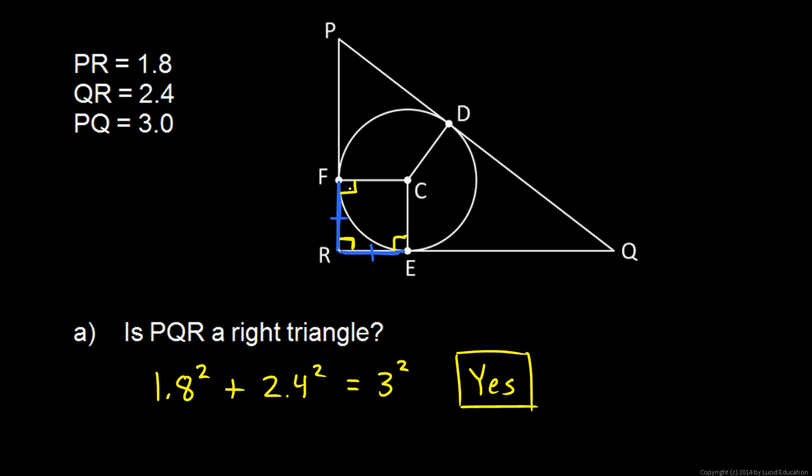So 90 degrees, 90 degrees, 90 degrees. For a quadrilateral, all four angles have to add up to 360, so this one has to also be 90 degrees.